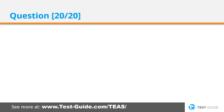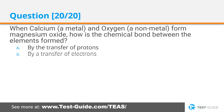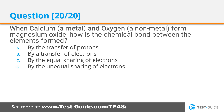Question 20. When calcium, a metal, and oxygen, a nonmetal, form calcium oxide, how is the chemical bond between the elements formed? By the transfer of protons, by a transfer of electrons, by the equal sharing of electrons, by the unequal sharing of electrons.